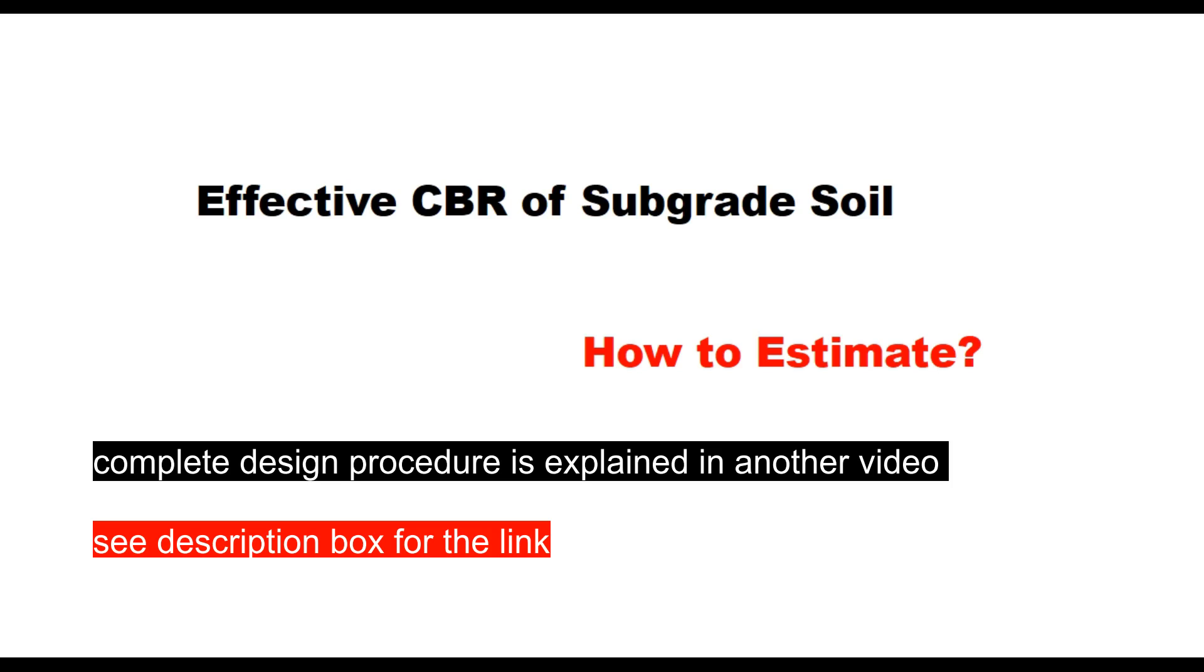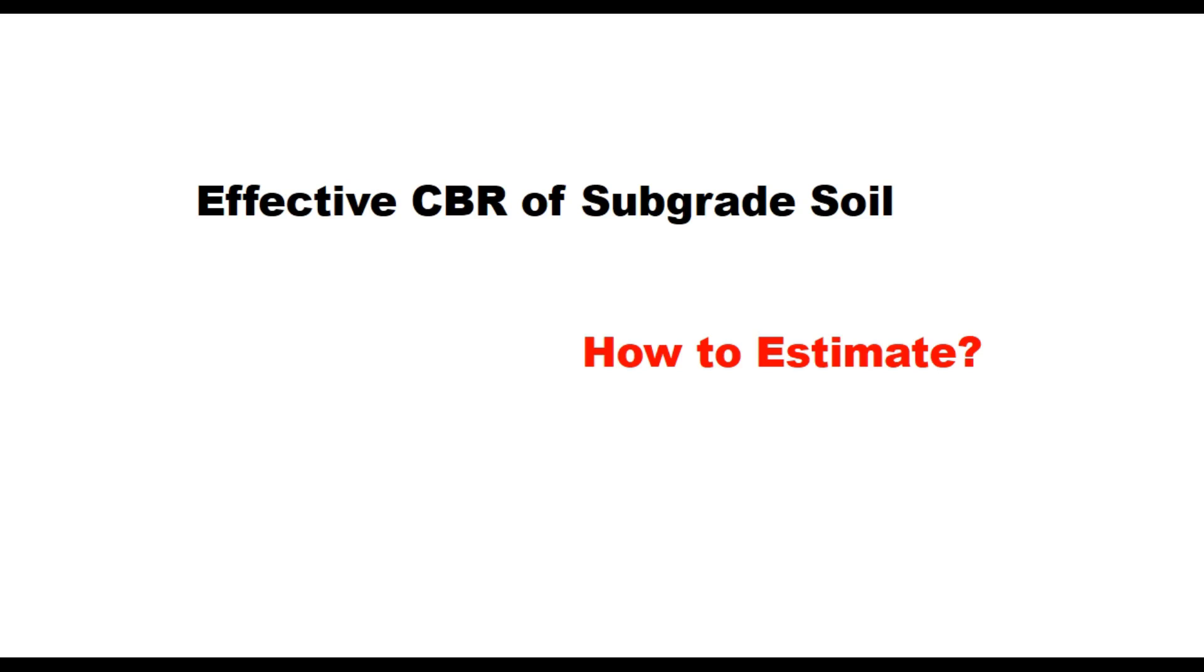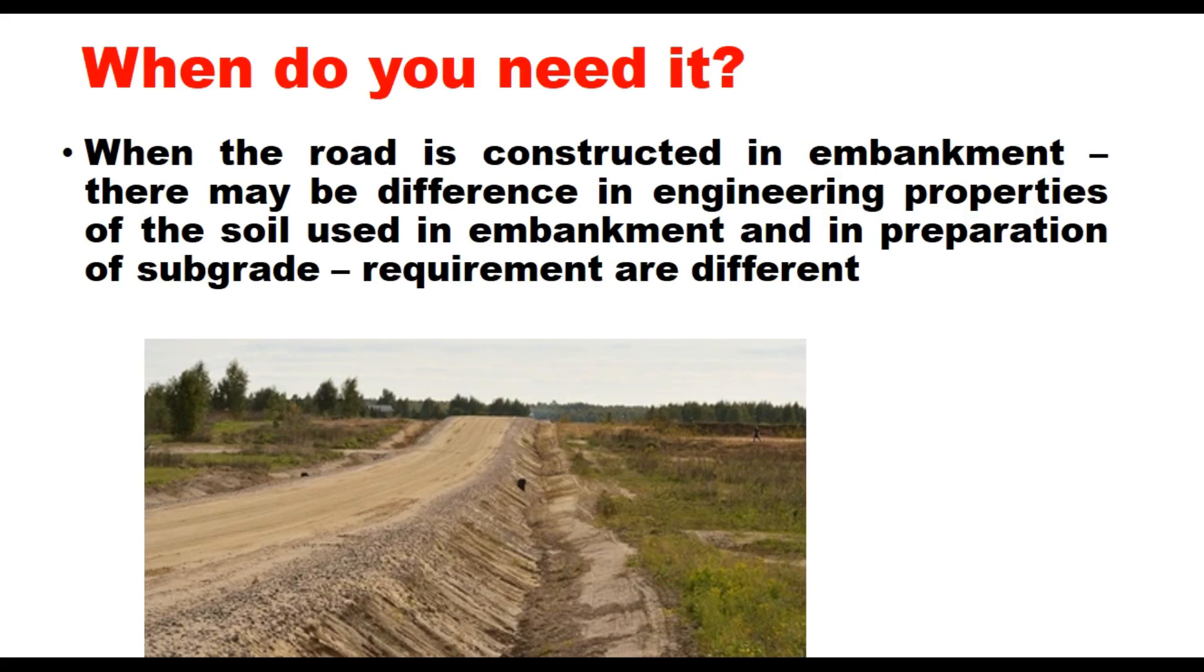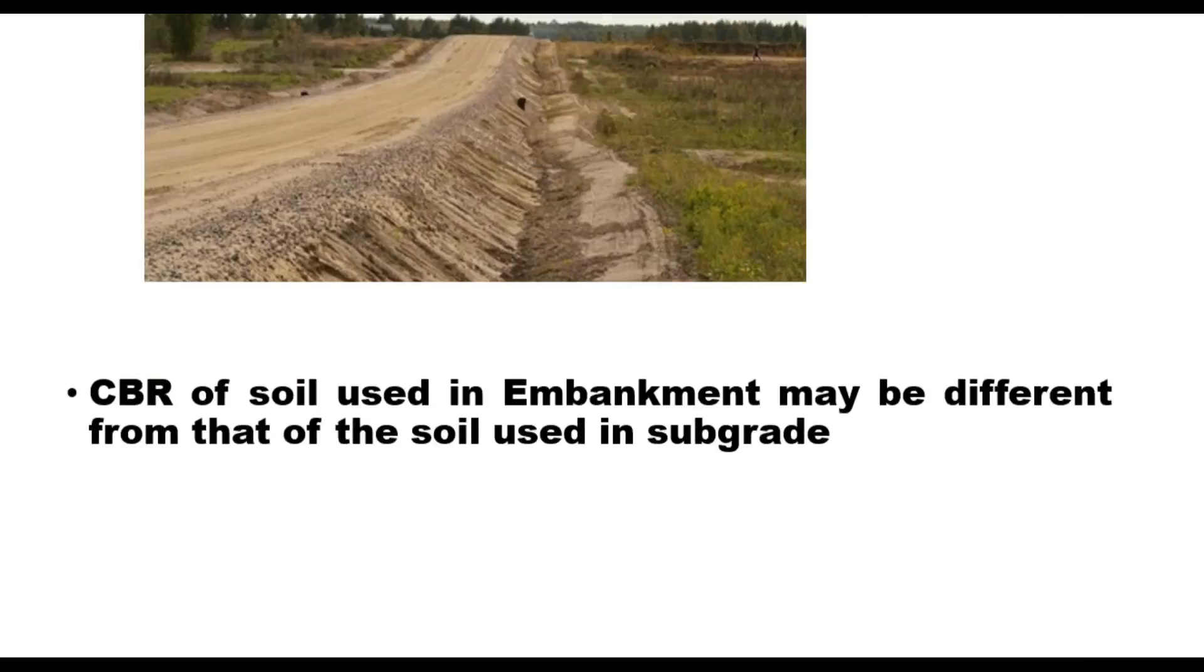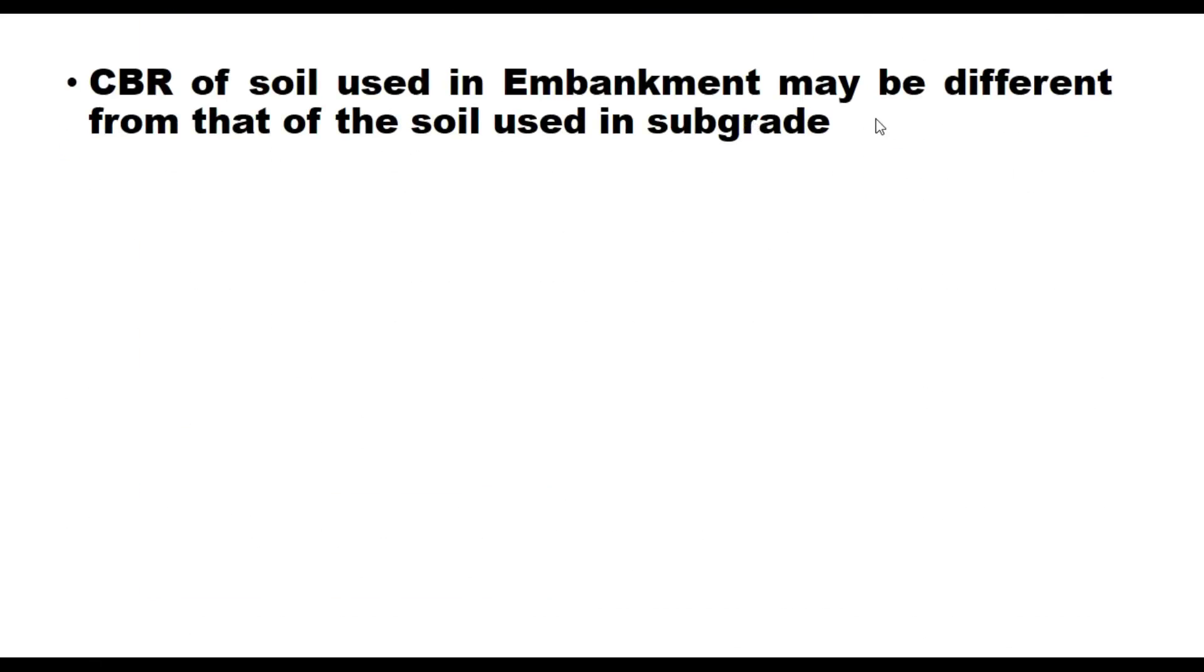Now when we consider CBR of subgrade soil, it actually assumes uniformity in the soil properties in the top 500 mm, which is termed as subgrade and the layer below it. When the road is constructed in embankment, there may be difference in engineering properties of the soil used in embankment and in preparation of subgrade because requirements of borrow material and subgrade soil are different. As such, CBR of soil used in embankment may be different from that of the soil used in subgrade.